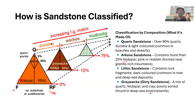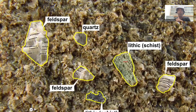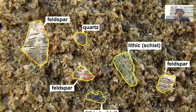That is how you classify sandstone according to its composition. Looking at this microscope image, you can see feldspar grains and quartz grains — this one is a calcium-rich feldspar. You can also see a lithic fragment here — in this case it is a schist.